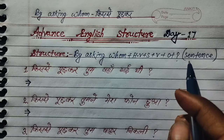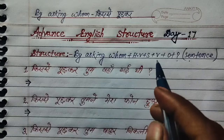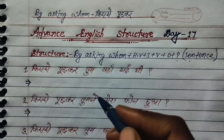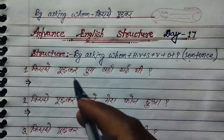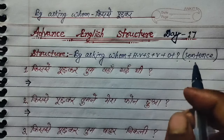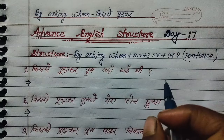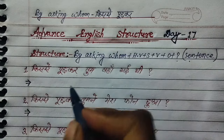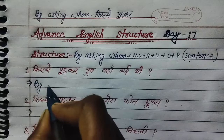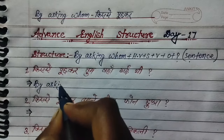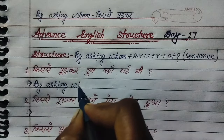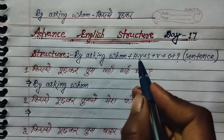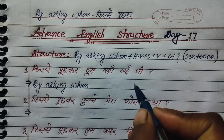Now I have the structure for the past indefinite sentence. We can use this by remembering 'by asking whom'. The structure is: by asking whom + helping word + subject + main verb (first form) + object + question mark. The Wh-word family always brings a helping word. The helping word for past indefinite tense is 'did'.